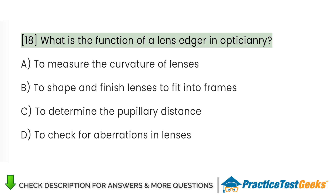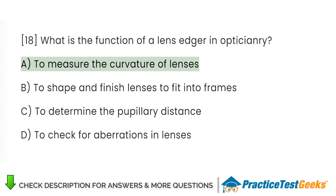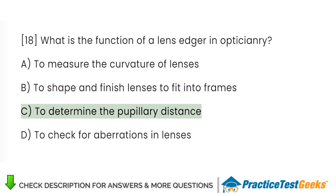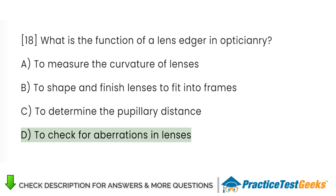What is the function of a lens edger in opticianry? A. To measure the curvature of lenses. B. To shape and finish lenses to fit into frames. C. To determine the pupillary distance. D. To check for aberrations in lenses.